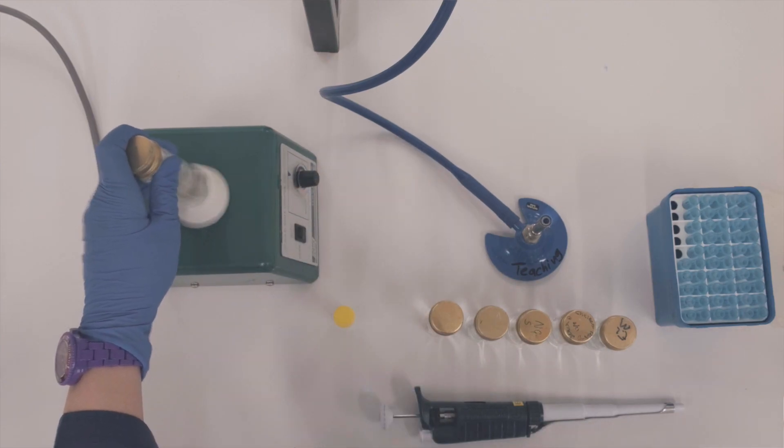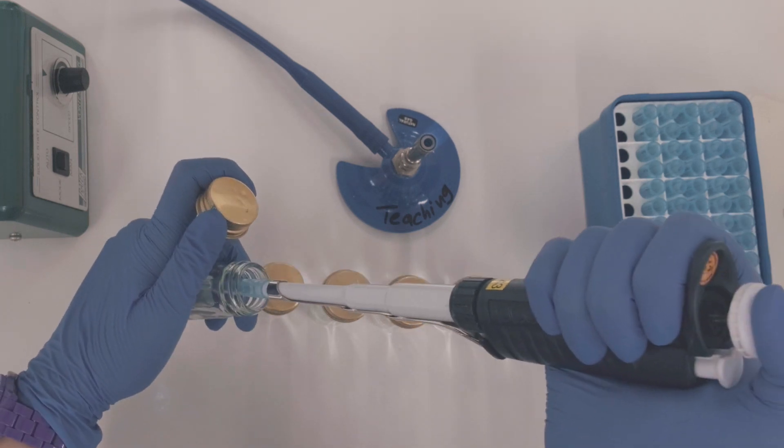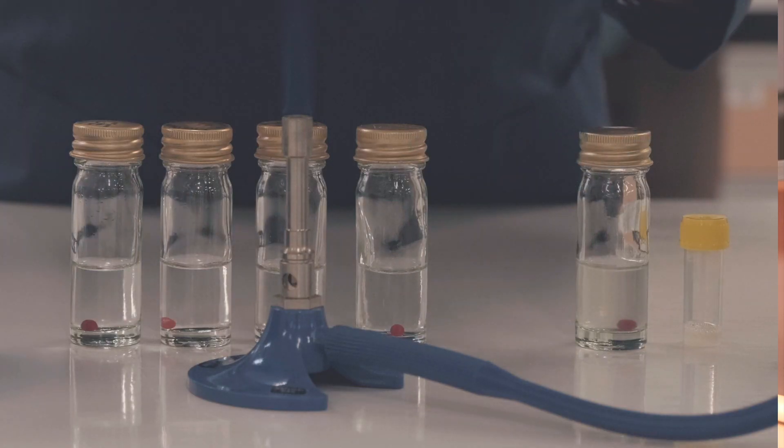The bottle is vortexed to thoroughly homogenize the sample. There is now a total reaction volume of 10 milliliters in this bottle, so this is the first 1 in 10 dilution. 1 milliliter is then extracted from this bottle and added to the next 9 milliliter bottle of saline.